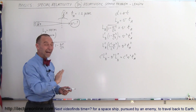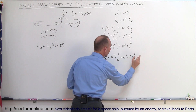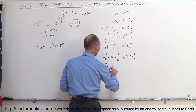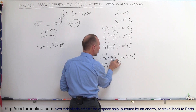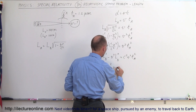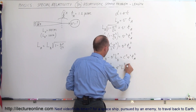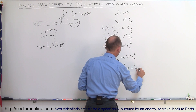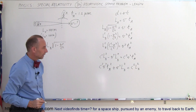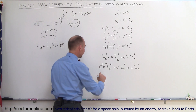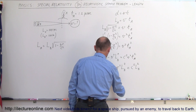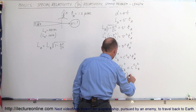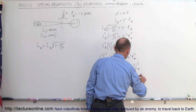Now I want to isolate V, so I move the V squared term to the other side and rearrange: C squared times V squared times T sub A squared plus V squared times L sub B squared equals C squared times L sub B squared. Factoring out V squared gives: V squared times the quantity (C squared times T sub A squared plus L sub B squared) equals C squared times L sub B squared.